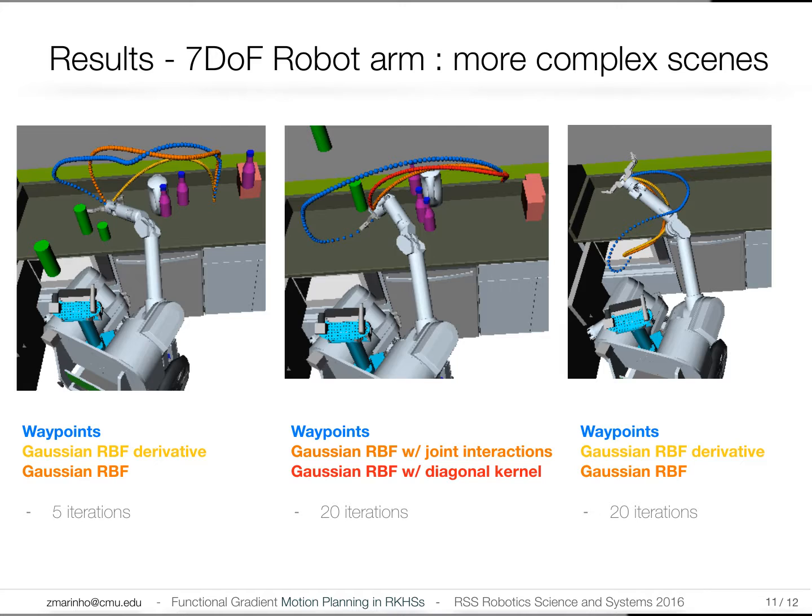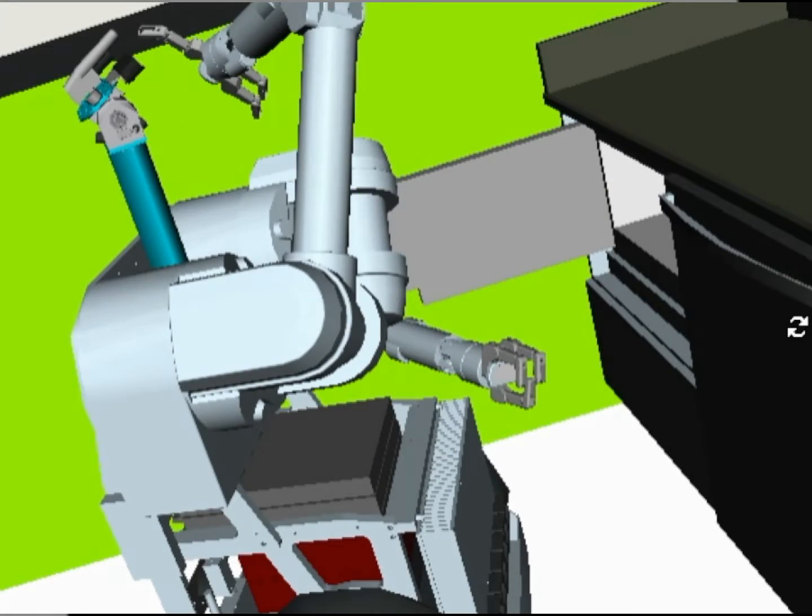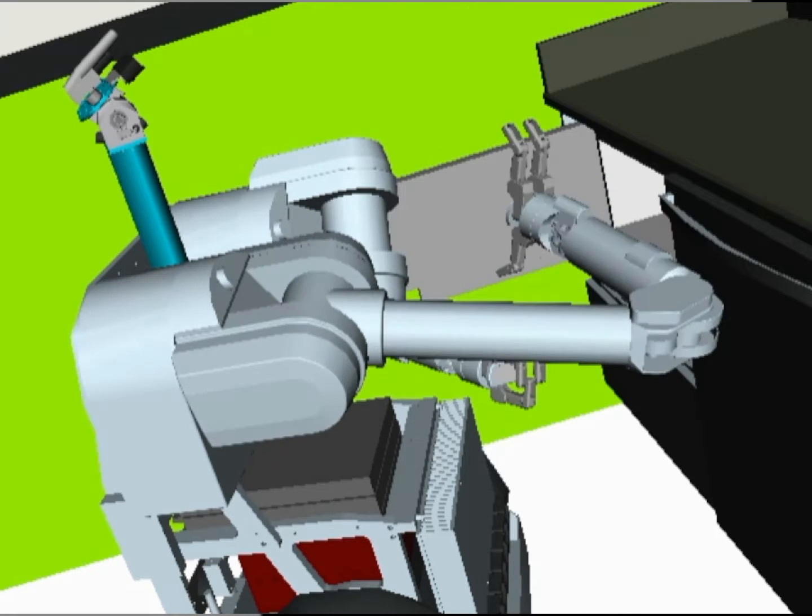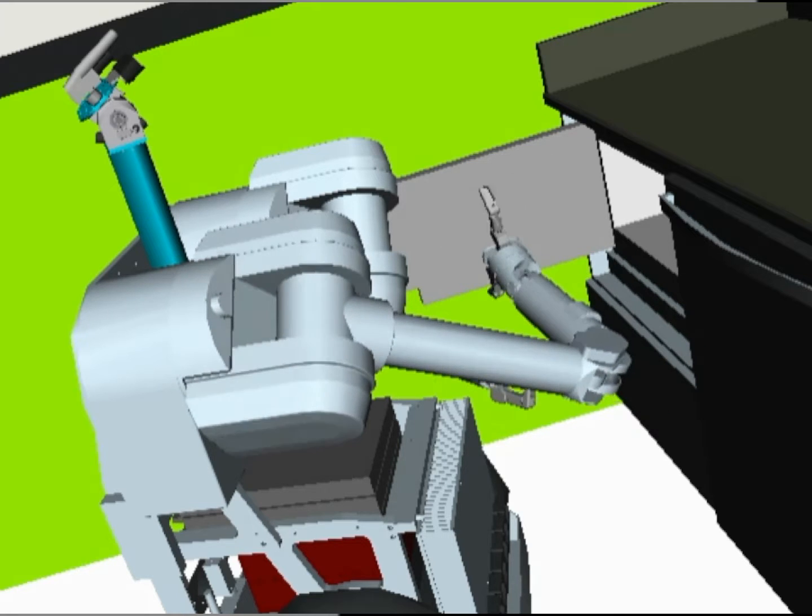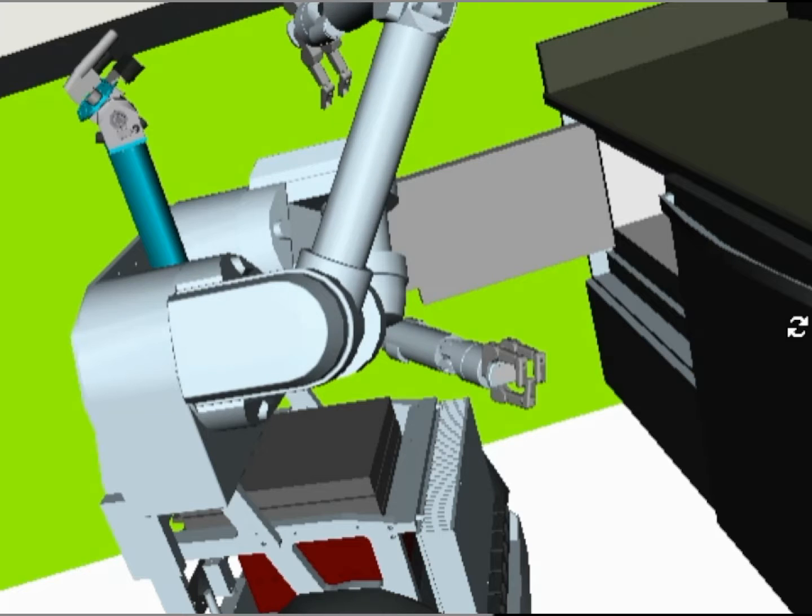We show as well a kernel that penalizes more first-order derivatives, so the trajectory will be smoother in velocity space. We can see in the video that this kernel achieves a very smooth trajectory because the space we're planning is already smooth by construction, so it has the required properties we want for the trajectory.